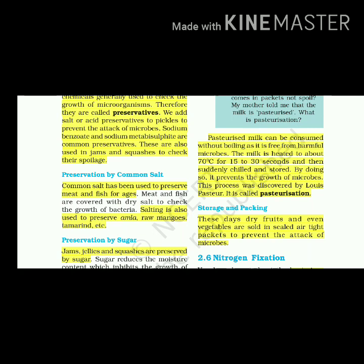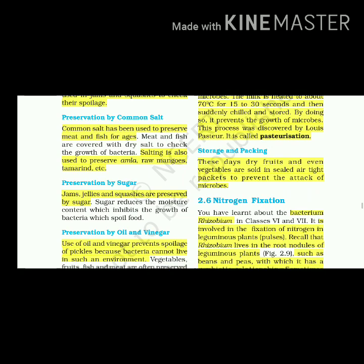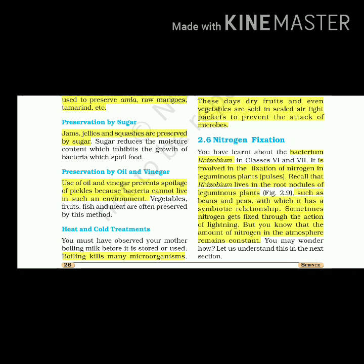These days, dry fruits and even vegetables are sold in sealed air-tight packets to prevent the attack of microbes. The bacterium Rhizobium is involved in the fixation of nitrogen in leguminous plant species. Rhizobium lives in the root nodules of leguminous plants such as beans and peas, with which it has a symbiotic relationship.